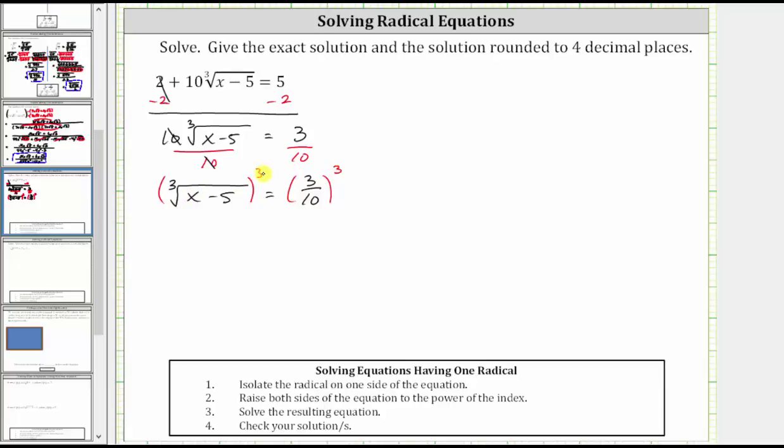On the left, cubing undoes the cube root, and therefore the left side simplifies to just the quantity x minus five. On the right, the cube of three-tenths equals three-cubed over ten-cubed, which equals 27 over 1000.